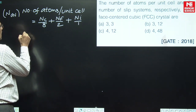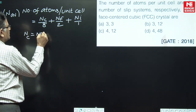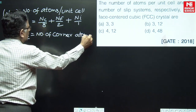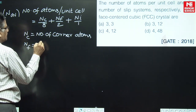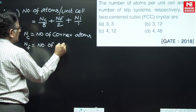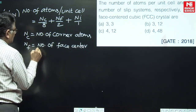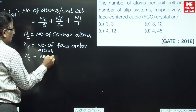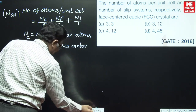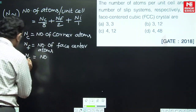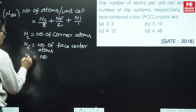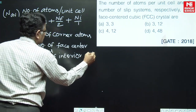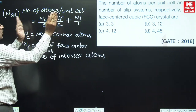Now in this formula, Nc denotes the number of corner atoms, Nf denotes the number of face-center atoms, and Ni denotes the number of interior atoms. This particular formula is applicable for cubic unit cells.